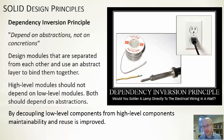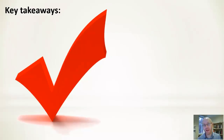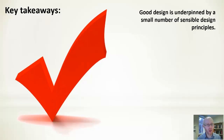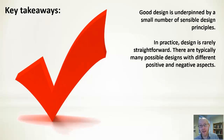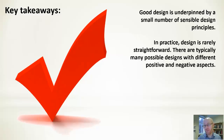That gives us more flexibility in how we can reuse high-level classes. Those are the takeaways — seven principles in two groupings. They're simple things, but always useful to keep in mind to help you design your code. Good design is underpinned by a small number of common sense, sensible design decisions. In practice, design is quite iterative and all these principles somewhat apply at the same time, often requiring a balance between competing principles that don't always pull in the same direction. But if you do try to use these principles, you'll end up with a better design than if you simply ignored them.